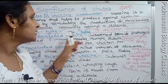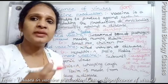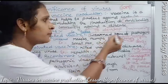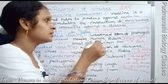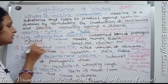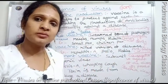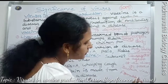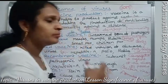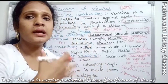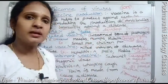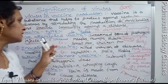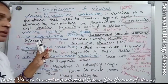To summarize live attenuated vaccines: the pathogen — either bacteria or viruses — is weakened by formaldehyde treatment applied many times, and then the weakened form of the pathogen is injected into our body. Examples include measles, mumps, rubella (MMR vaccine), smallpox, and chickenpox. Mumps involves swollen parotid glands.